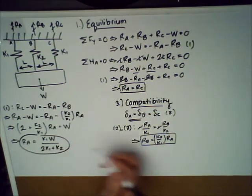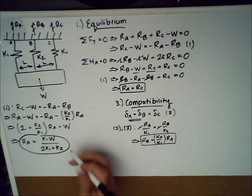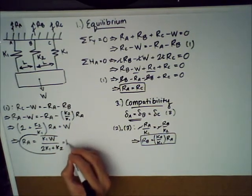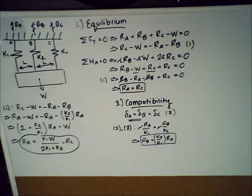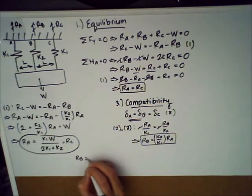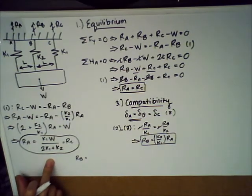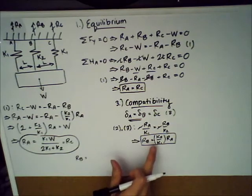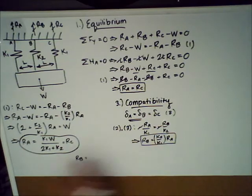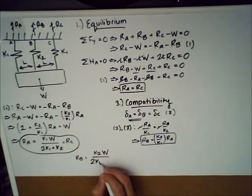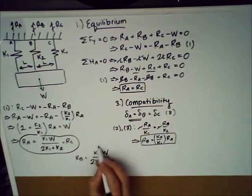And as it turns out, as we showed earlier, that's also R C. So let's include that in the circle. Now, going back to our second box equation, now we can solve for R B as well. So R B equals K2 over K1 times this. So we see that the K1 from the denominator cancels the K1 from the numerator, and we're left with K2 in the numerator. So we simply have K2 W over 2K1 plus K2.